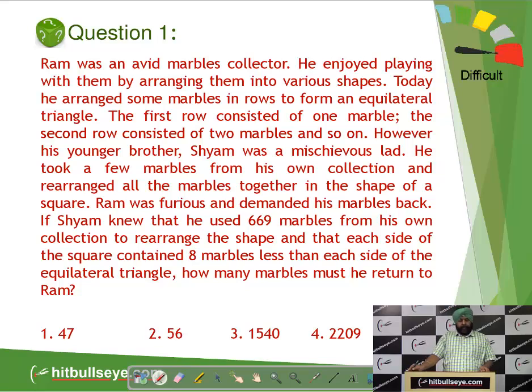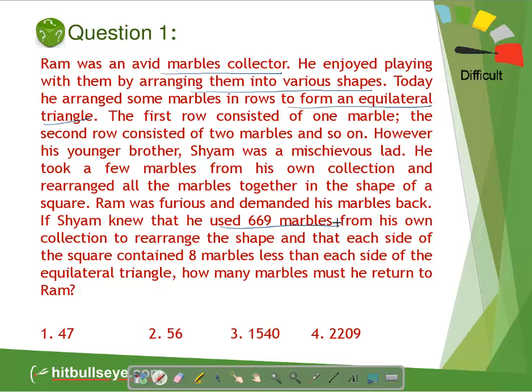Before you do so, just have a look at this question on your screen. Ram was an avid marble collector. He enjoyed arranging them into various shapes. Today he arranged them to form an equilateral triangle. His brother Shyam added 669 marbles from his own collection to make it into the shape of a square. See, this is a typical competitive exam problem - very verbose, very lengthy, very tough to do under time pressure.